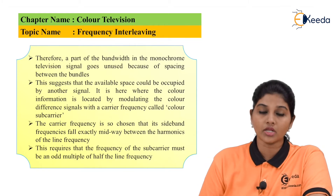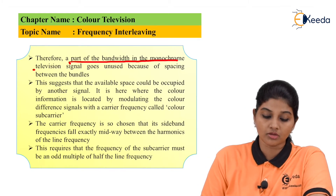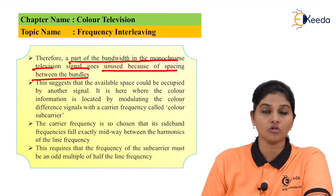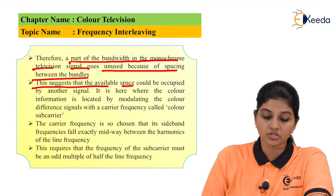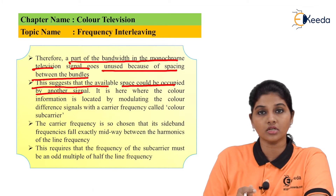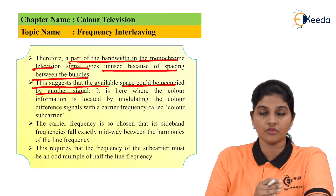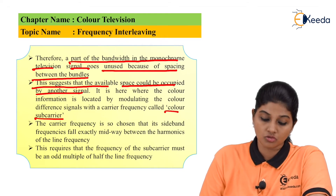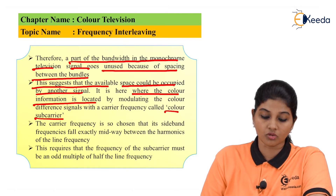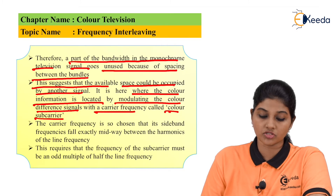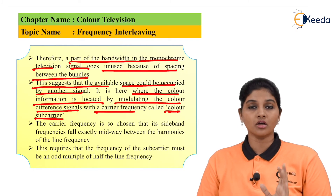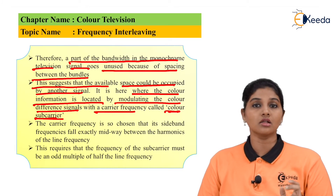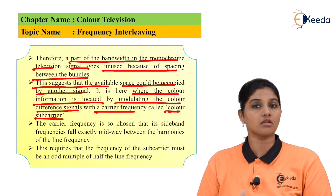Therefore, in monochrome television, a part of the bandwidth goes unused because of the spacing between the bundles, and that spacing contains information about color. It is suggested that this available space could be occupied by another signal. In color television, this unused space carries the color information, and that is called the color subcarrier signal.